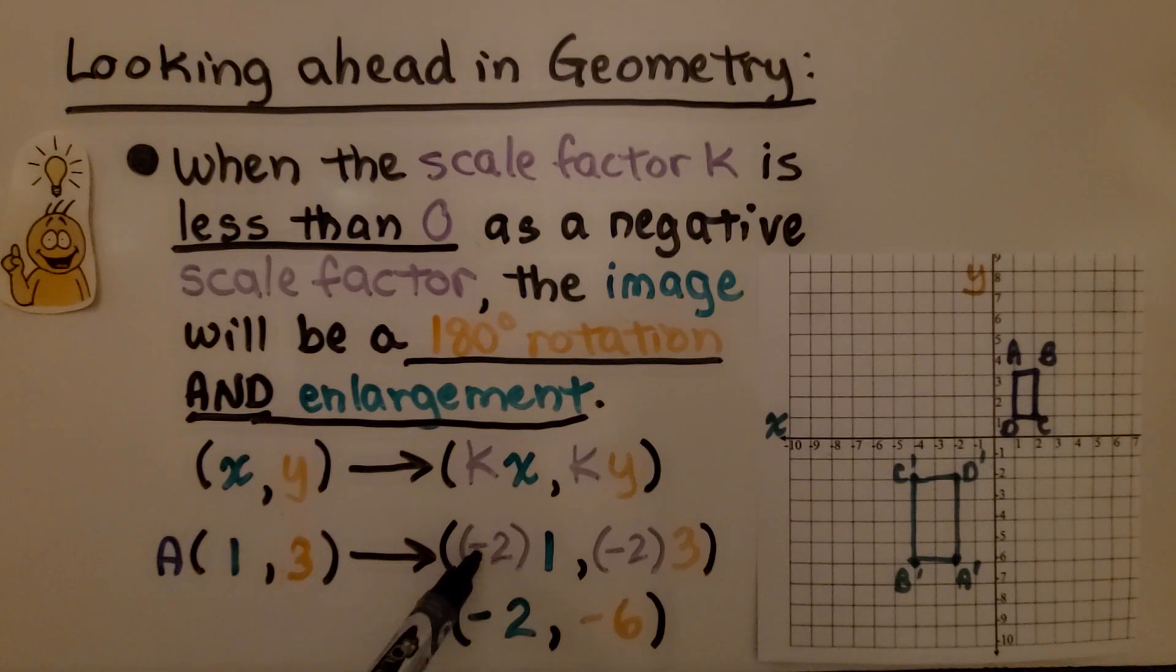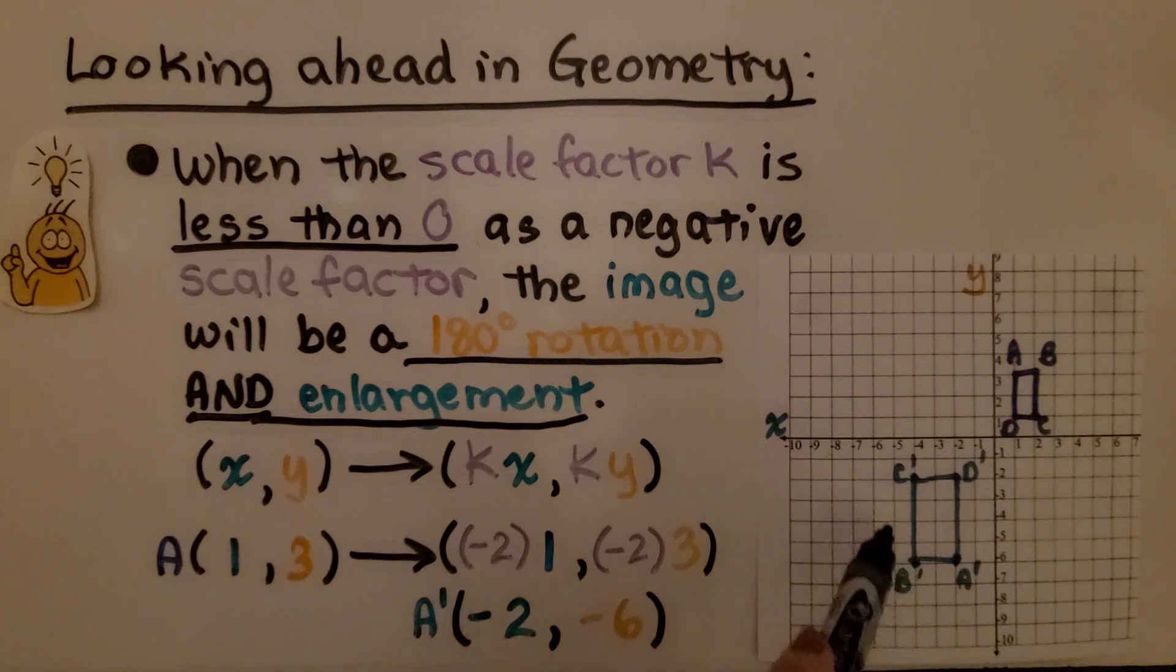we would multiply by that scale factor k, that negative 2 scale factor. And we would get negative 2, negative 6, and that would flip A prime down here. So this went like this and rotated. So now A prime is down here.